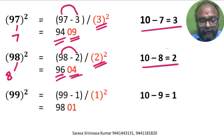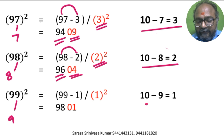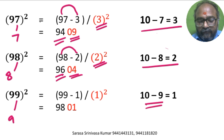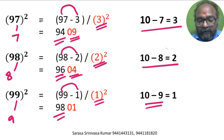99 square. Units digit is 9. 10 minus 9 is 1. So 99 minus 1 is 98. 1 square is 1. We write it as 01. So 98, 01 is the answer.